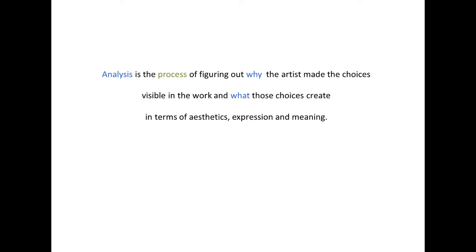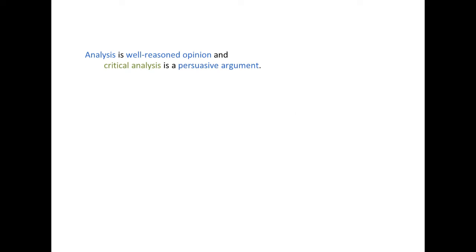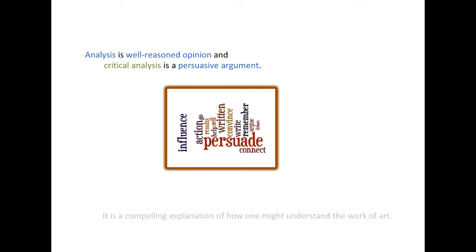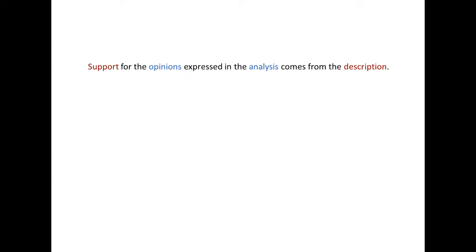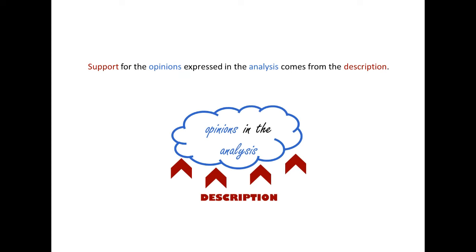Analysis is the process of figuring out why the artist made the choices visible in the work, and what those choices create in terms of aesthetics, expression, and meaning. Analysis is well-reasoned opinion, and critical analysis is a persuasive argument. It is a compelling explanation of how one might understand the work of art. Support for the opinions expressed in the analysis comes from the description.